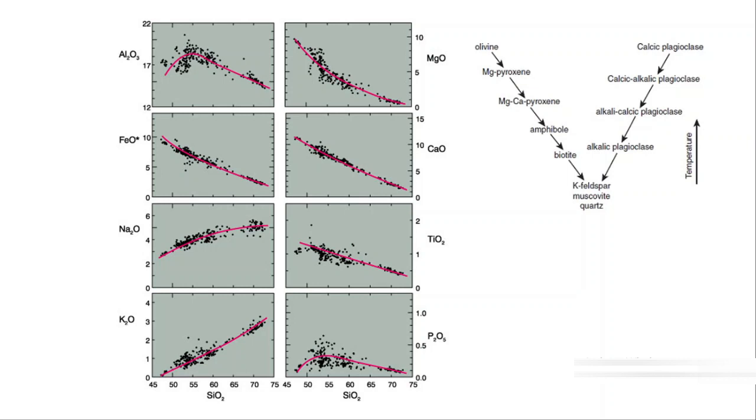He plotted all the major elements such as alumina, alkalis, iron oxide, and magnesium oxide against silica. Why did he choose silica as the reference? Because silica is actually telling you the time frame.